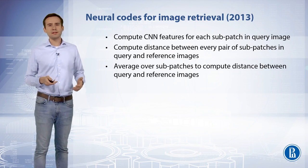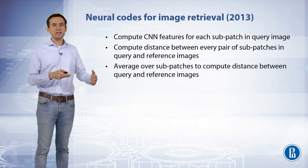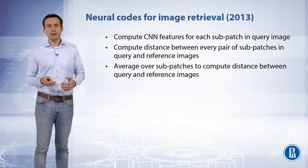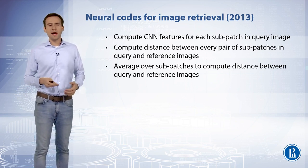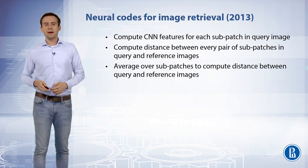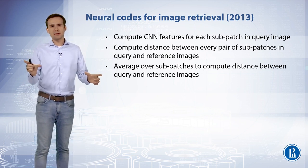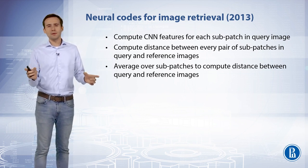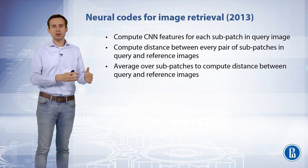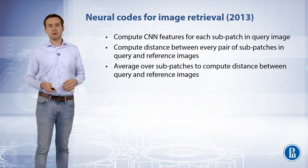For each image we extract multiple sub-patches of different sizes at different locations whose union covers the whole image. For each extracted sub-patch we compute a CNN representation, and we compute distances between each query sub-patch and the reference image sub-patch. The distance between the reference and the query image is then computed as the average distance of each query sub-patch to that of the reference image.